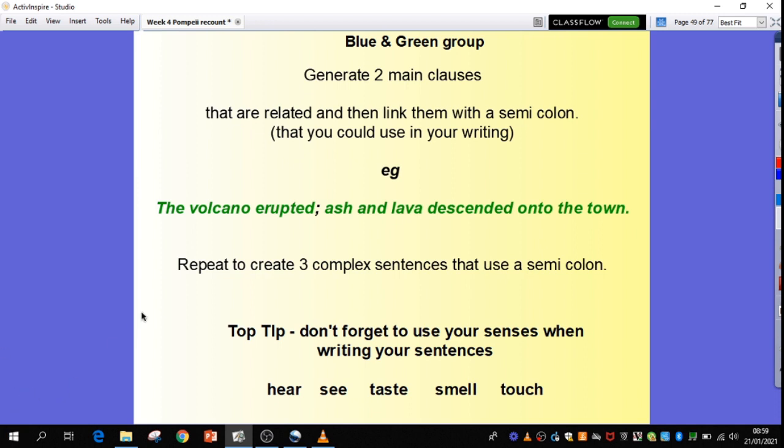Here's the main clause: The volcano erupted. And here, Ash and lava descended onto the town. And I've joined them using my semicolon. So, what I want you to do is to do that three times to create three complex sentences using a semicolon that you can use in your writing in your third paragraph.